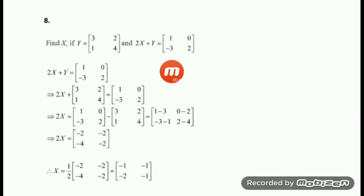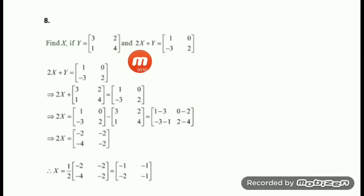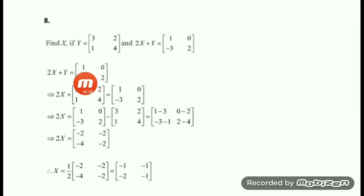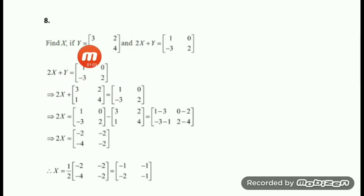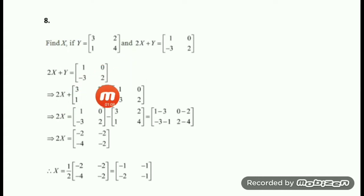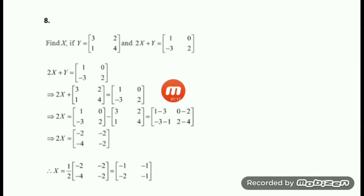First, let us write down the given equation. Your given equation is 2X plus Y is equal to [1, 0; -3, 2]. After that we substitute the given value of Y. Twice X keep as it is, plus Y value which is [3, 2; 1, 4], equal to the right hand side as it is.